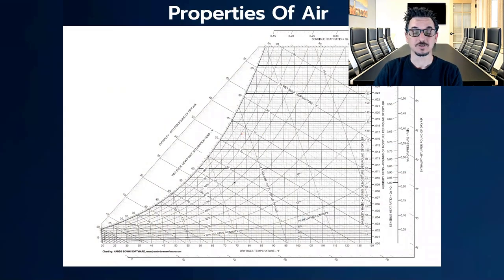This is a psychometric chart if you're not familiar with them. It basically plots all the properties of air against each other so that you can see how they interrelate and you can visually see what happens when we cool and dehumidify air.